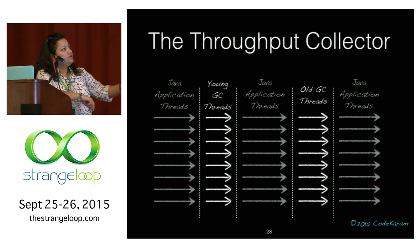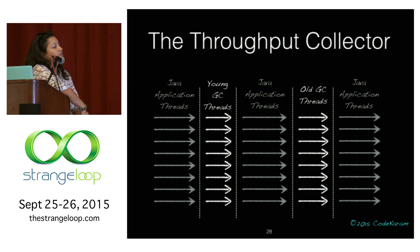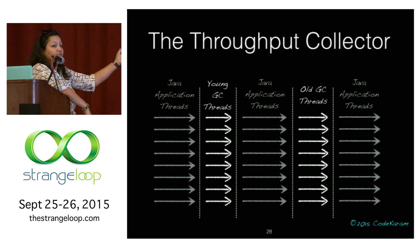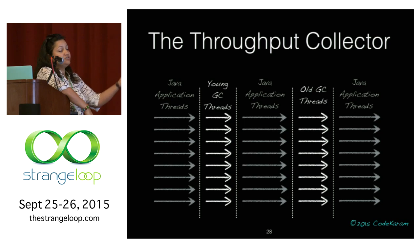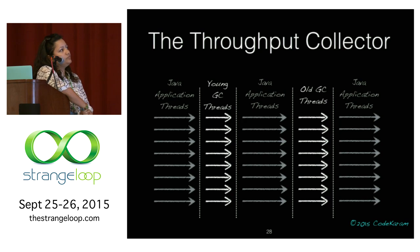The throughput collector is similar to the serial collector. The old generation collection for the throughput collector up until JDK 6 used to be single-threaded, just like serial GC. Then JDK 5 update 6 introduced parallel old, so now parallel GC threads are employed for old collection as well.